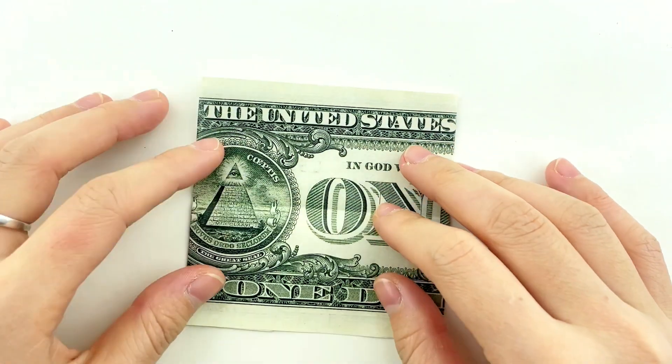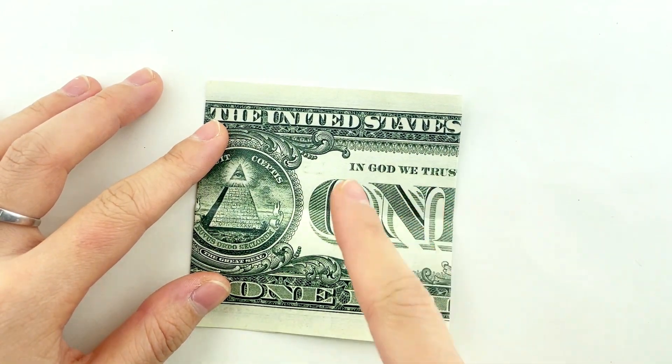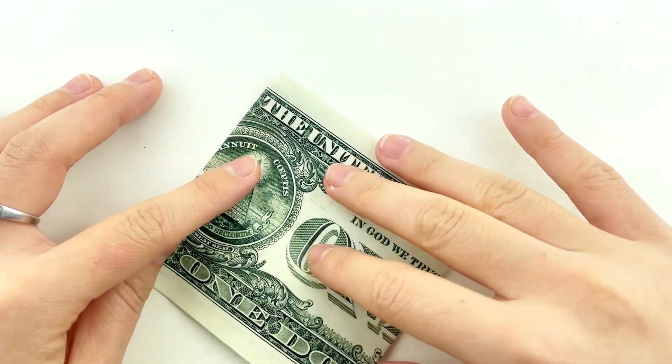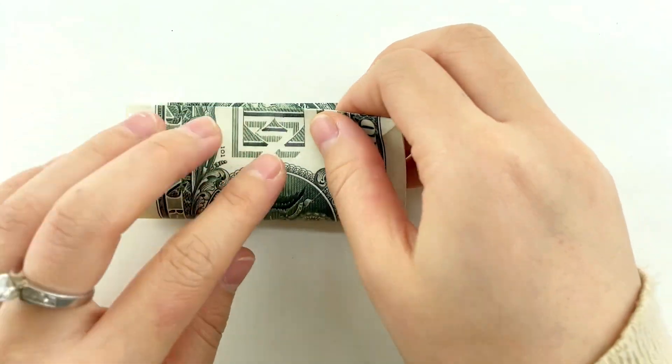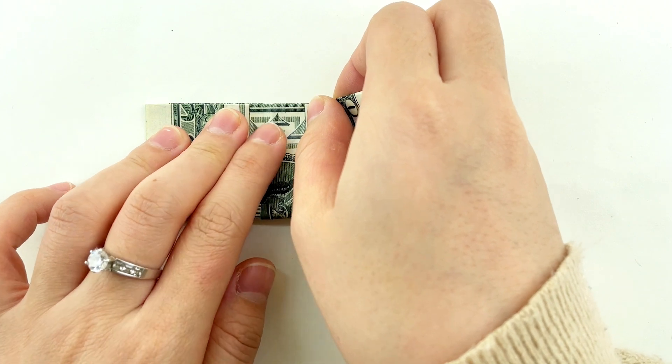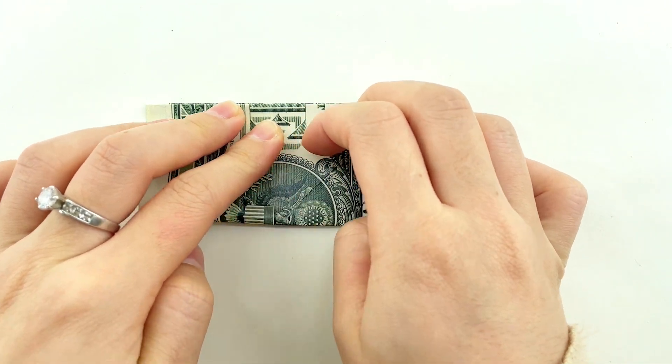Unfold and rotate the bill, and repeat these steps on the other side. Remember, symmetry is key.